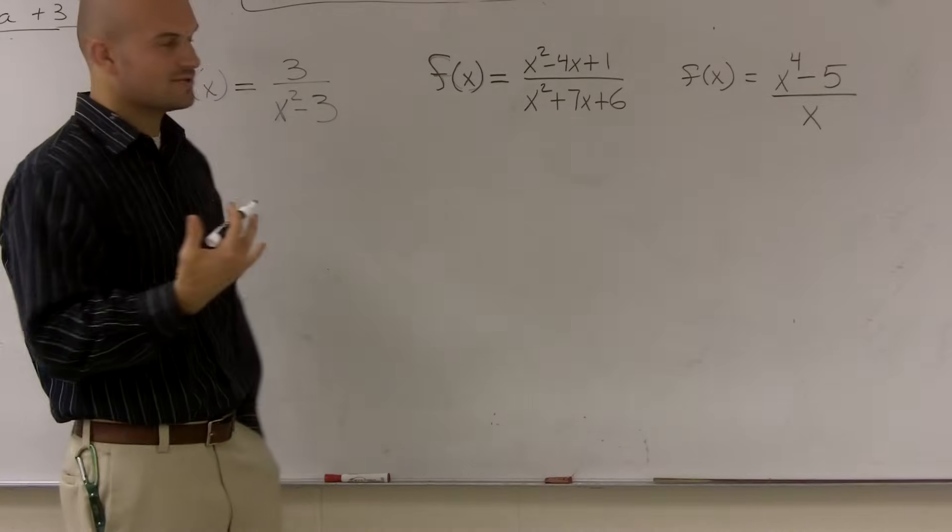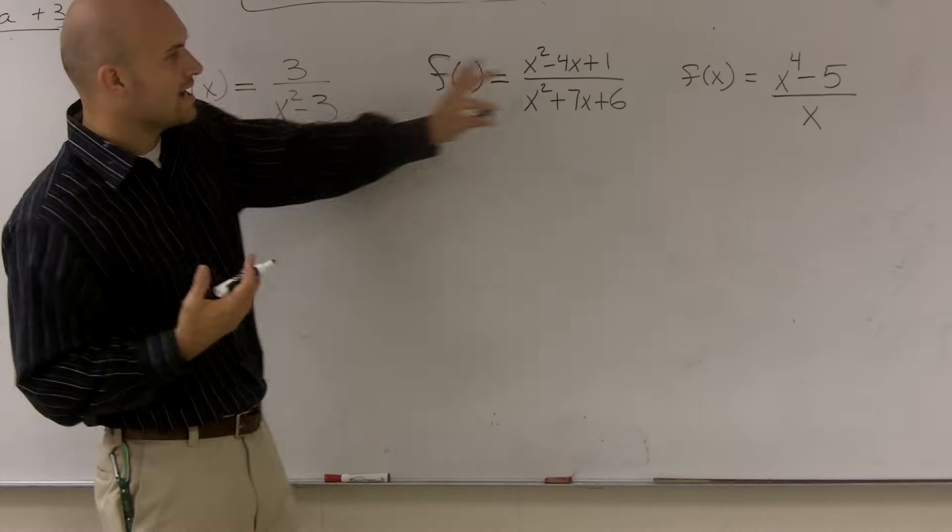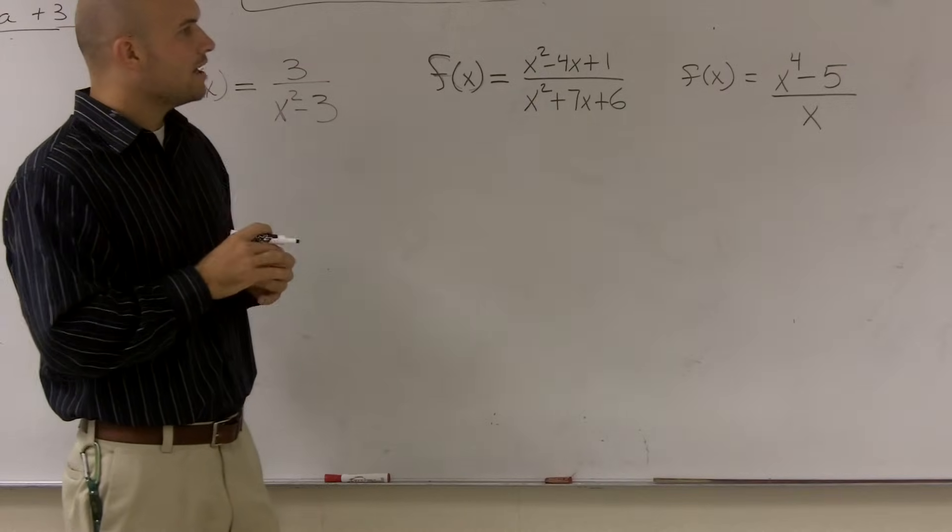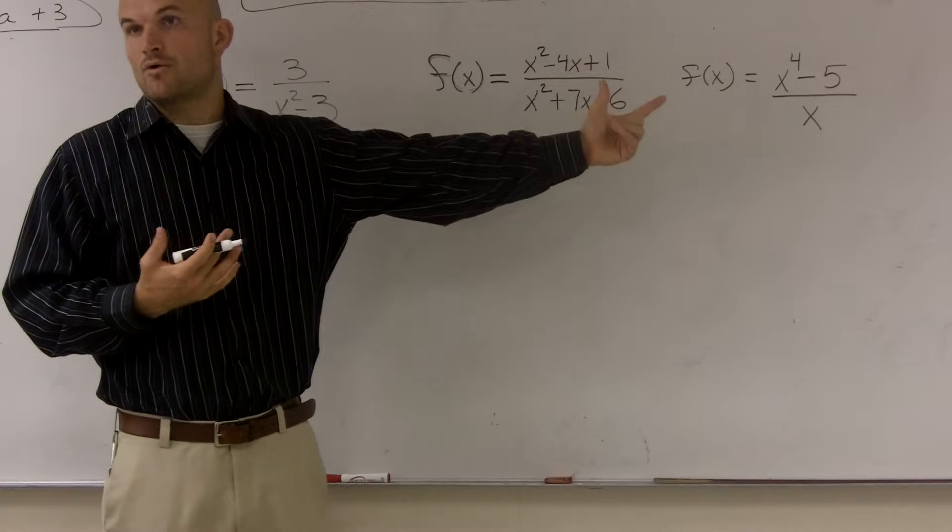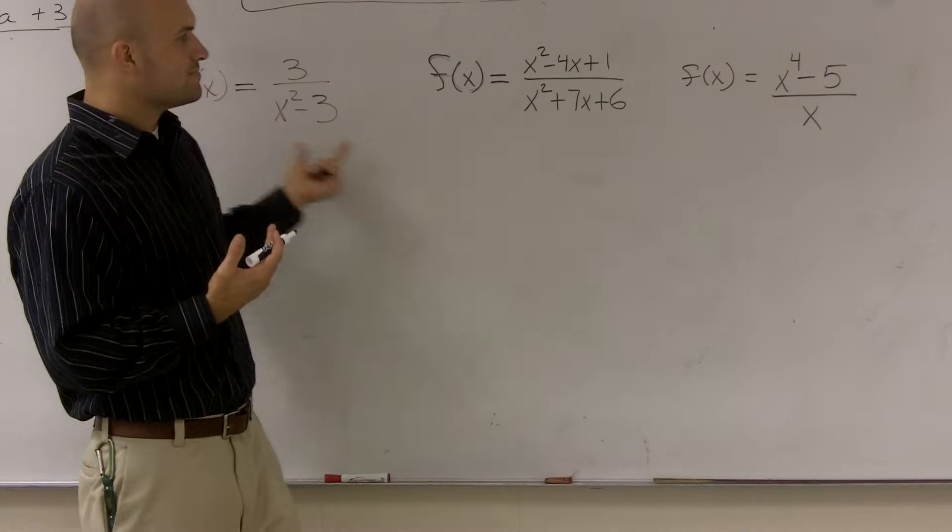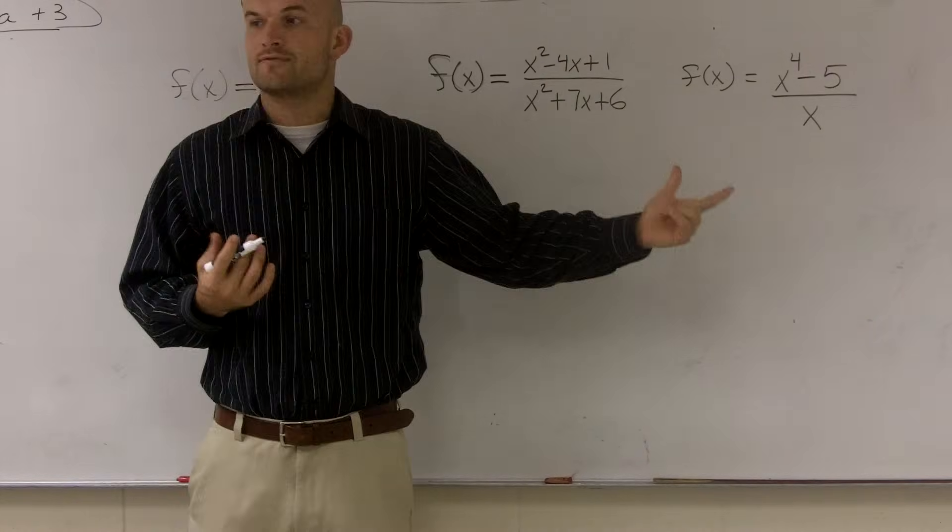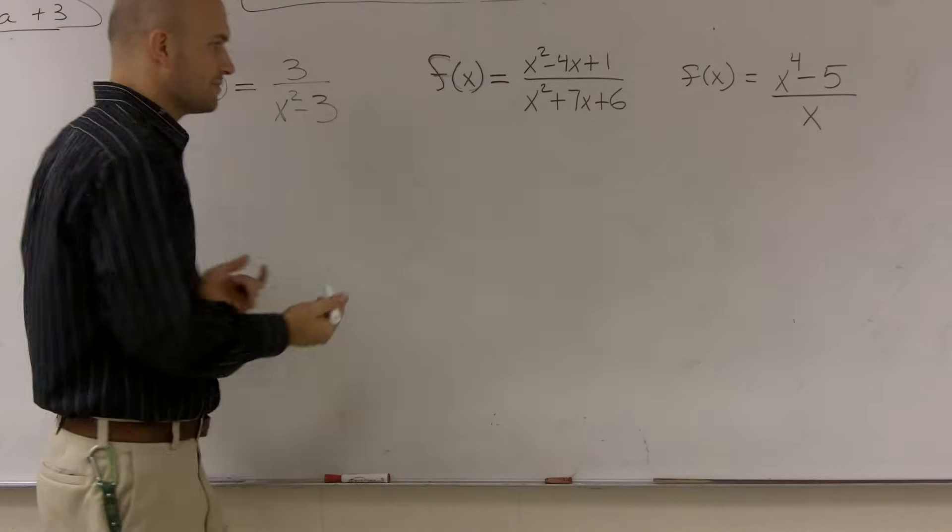So it's very similar to actually finding the domain. If you remember, when you have a rational function to find the domain, you determine what values make it zero on the bottom. And whatever values make it zero are not going to be part of your domain. And that's the same thing with the vertical asymptote.